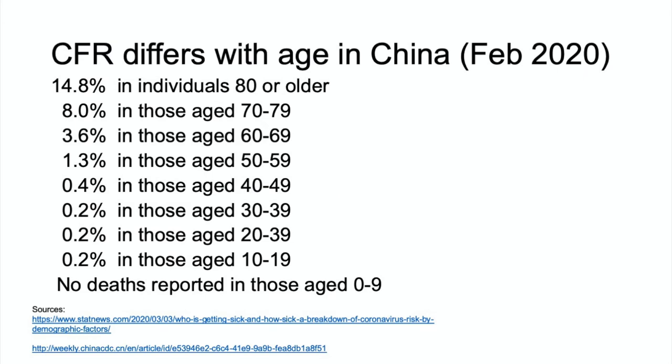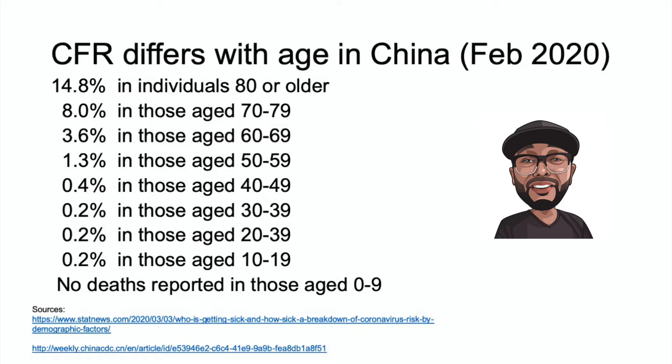One interesting feature of this outbreak is how the case fatality rate varies across different subpopulations. For example, the case fatality rate appears relatively high among people over the age of 70. Children under the age of 10, alternatively, appear relatively unaffected. In addition, the disease seems to really impact people with prior health conditions.